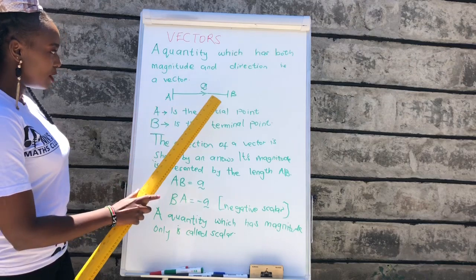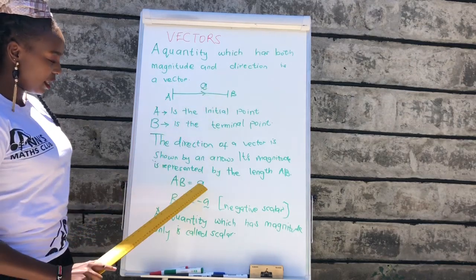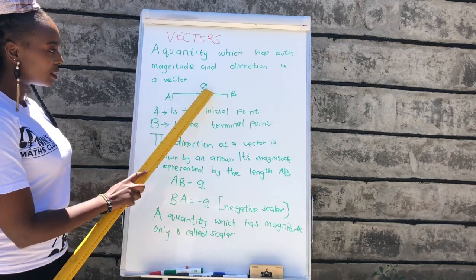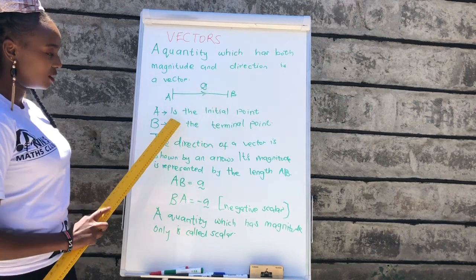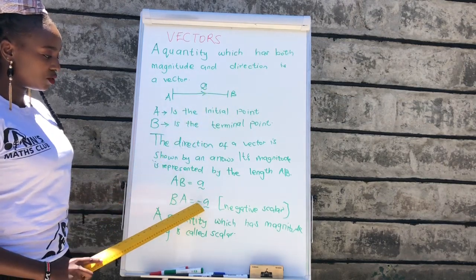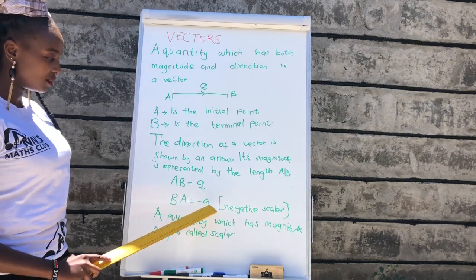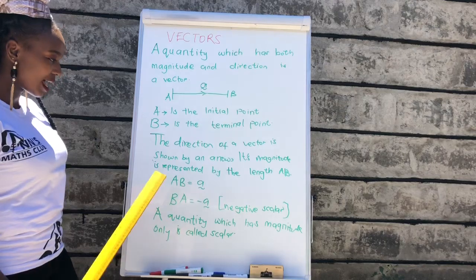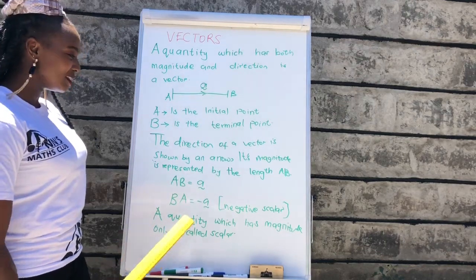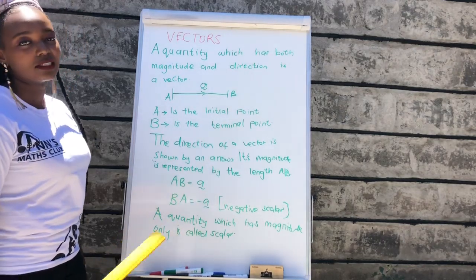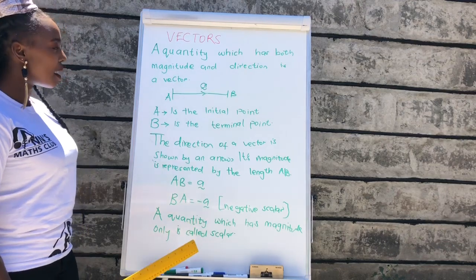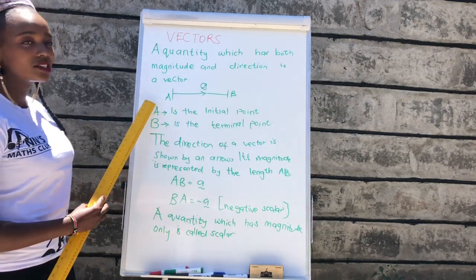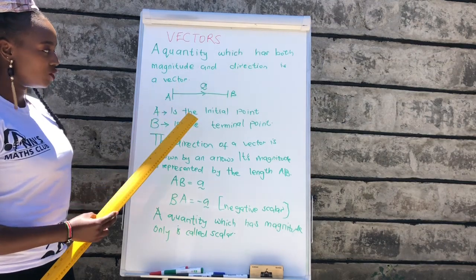We know that AB is A, and BA — since we are coming from B to A — the sign will change, the direction is changing. So automatically we introduce a negative sign and it becomes negative A. So a quantity which has magnitude only is called a scalar. What I'd like you to note is when the direction changes, the sign will also change.